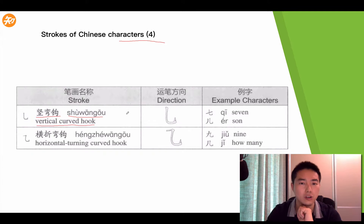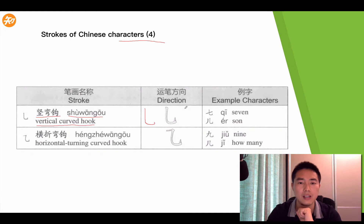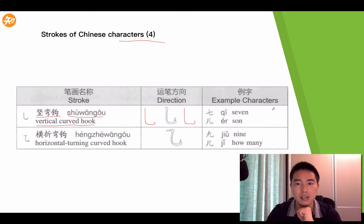How to write this stroke: firstly you write a vertical, then you curve it, then add a hook. One more time — vertical, curve, hook. For example, this character 七 is called Qī in Chinese, which means seven.